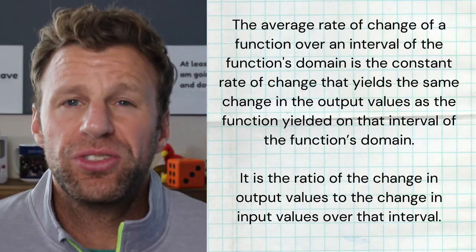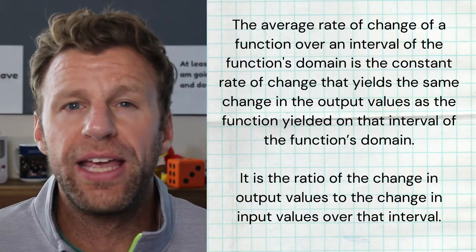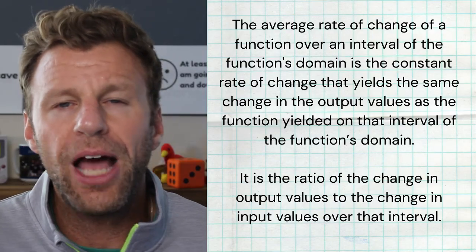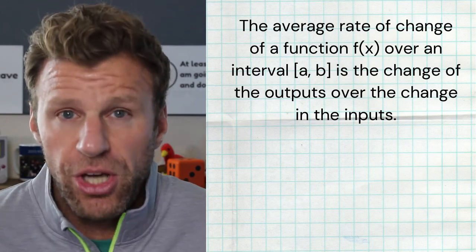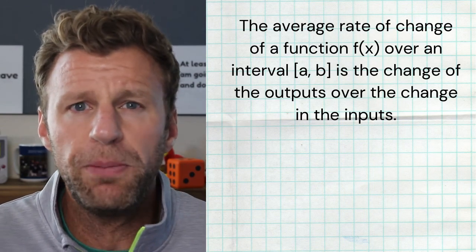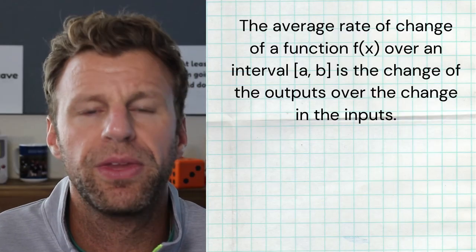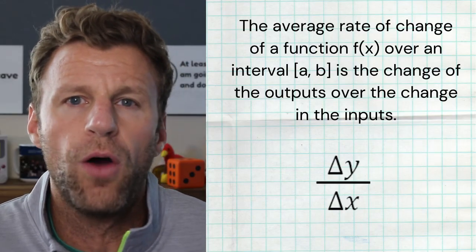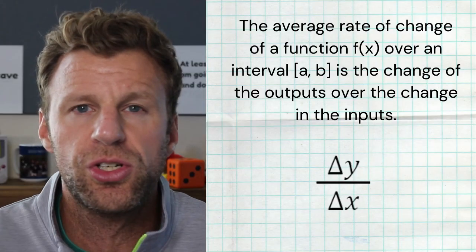First up, let's talk about the average rate of change over an interval of a function. The official AP Pre-Calculus definition can be a little wordy and confusing, but at the end of the day, just remember: the average rate of change is the ratio of your change of outputs to your change of inputs over that interval. Mathematically, we call this delta Y over delta X.